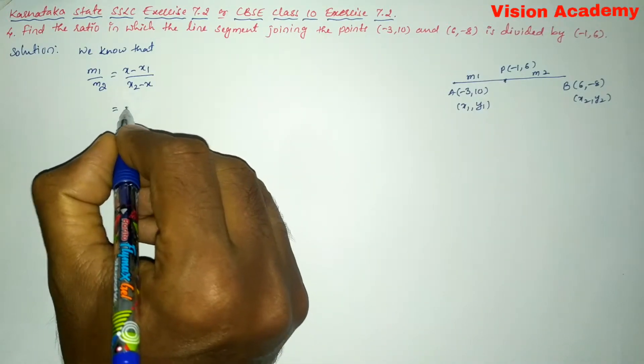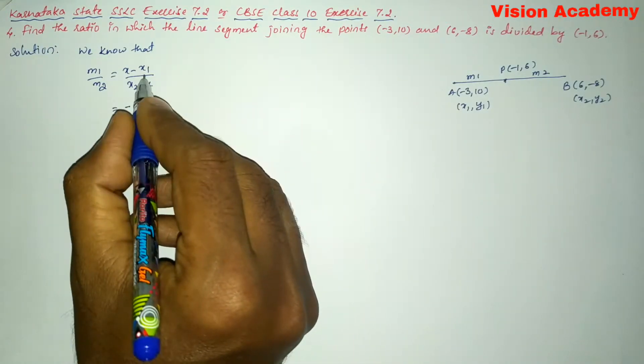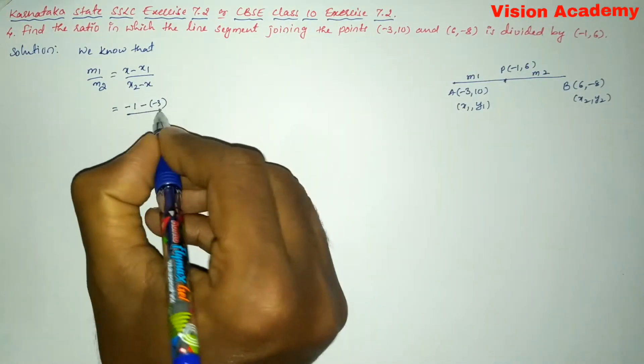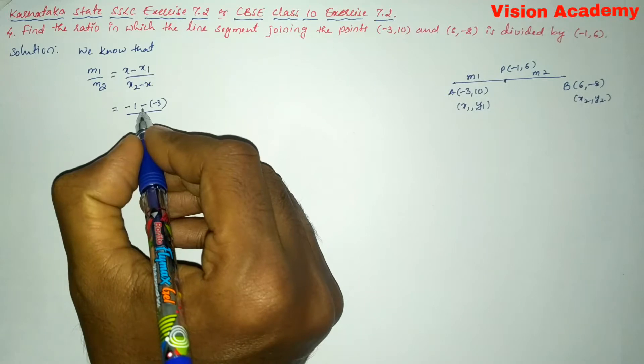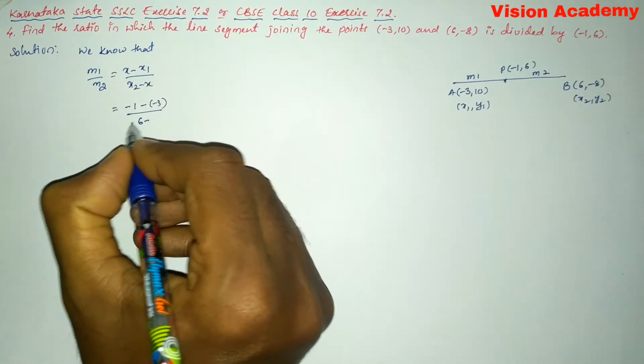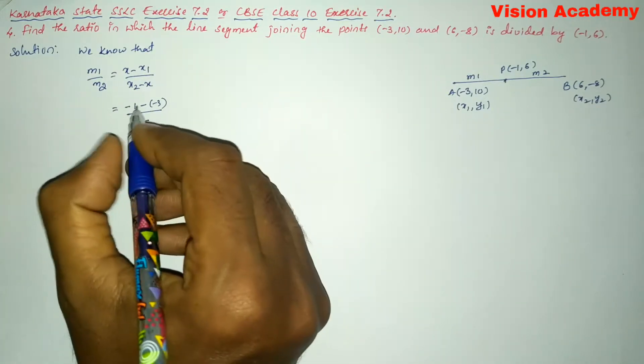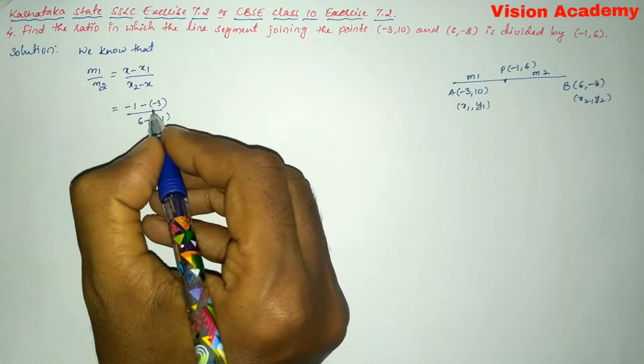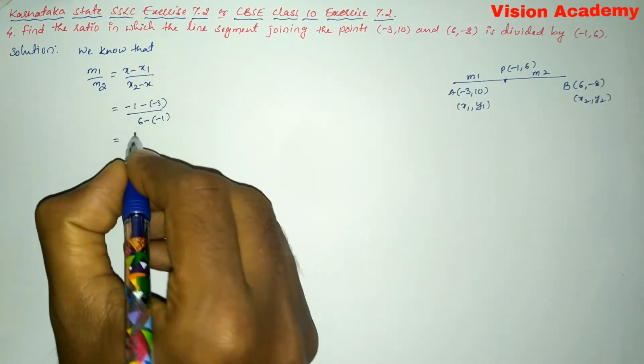Here, x is -1, x1 is -3, and x2 is 6. So we have (-1 - (-3)) divided by (6 - (-1)). Let us simplify this one.